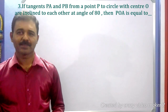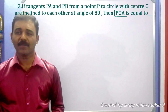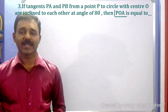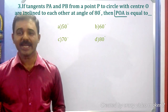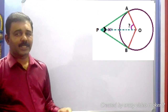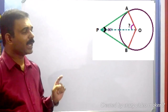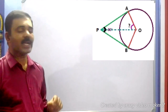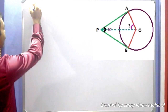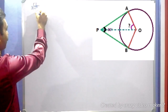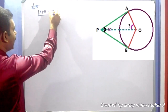Now taking the third problem. If tangents PA and PB from a point P to a circle with center O are inclined to each other at an angle of 80 degrees, then angle POA is equal to — given four options: option A, 50 degrees; option B, 60 degrees; option C, 70 degrees; option D, 80 degrees. Here O is the center of the circle, P is the external point, and PA and PB are the two tangents.